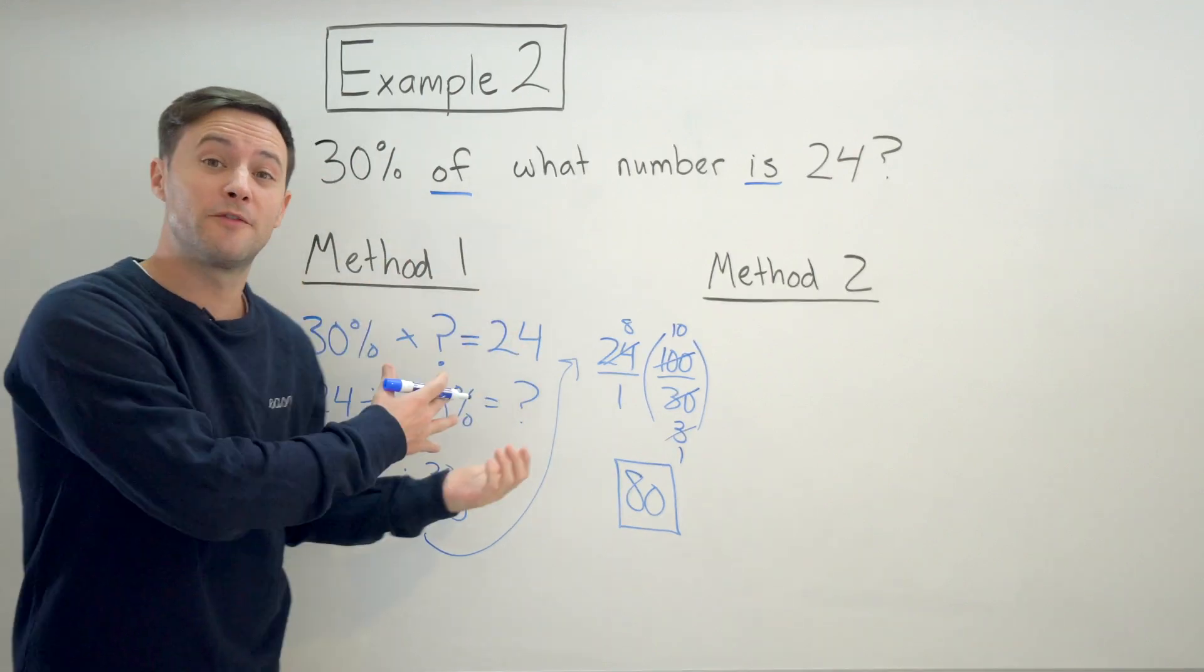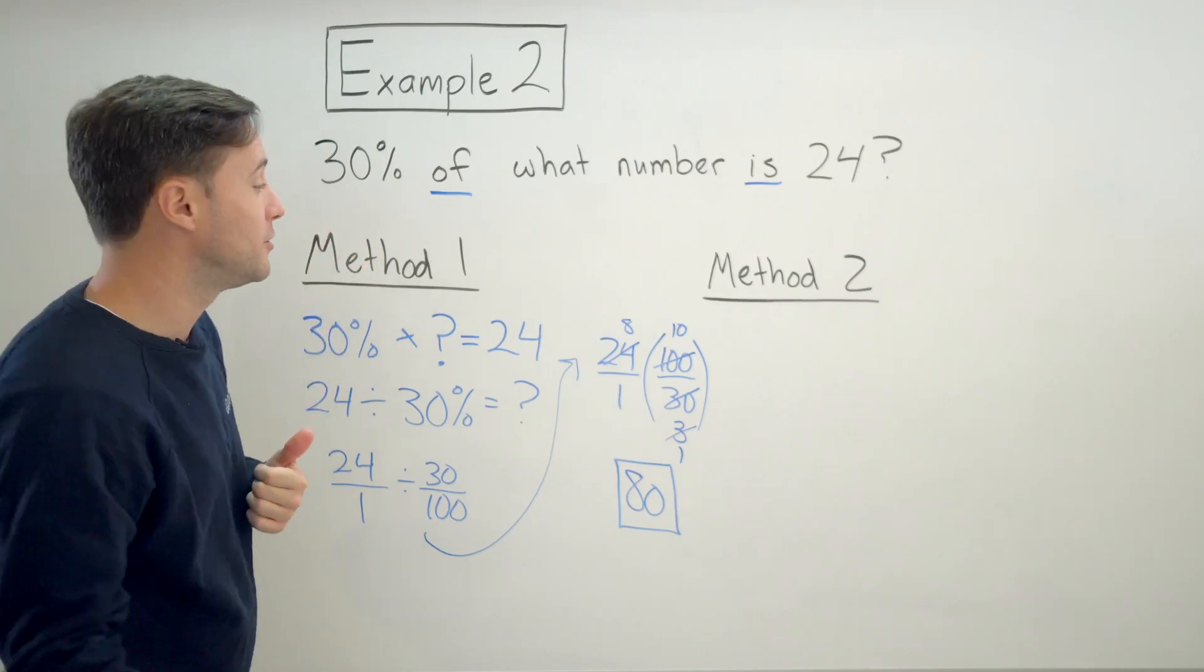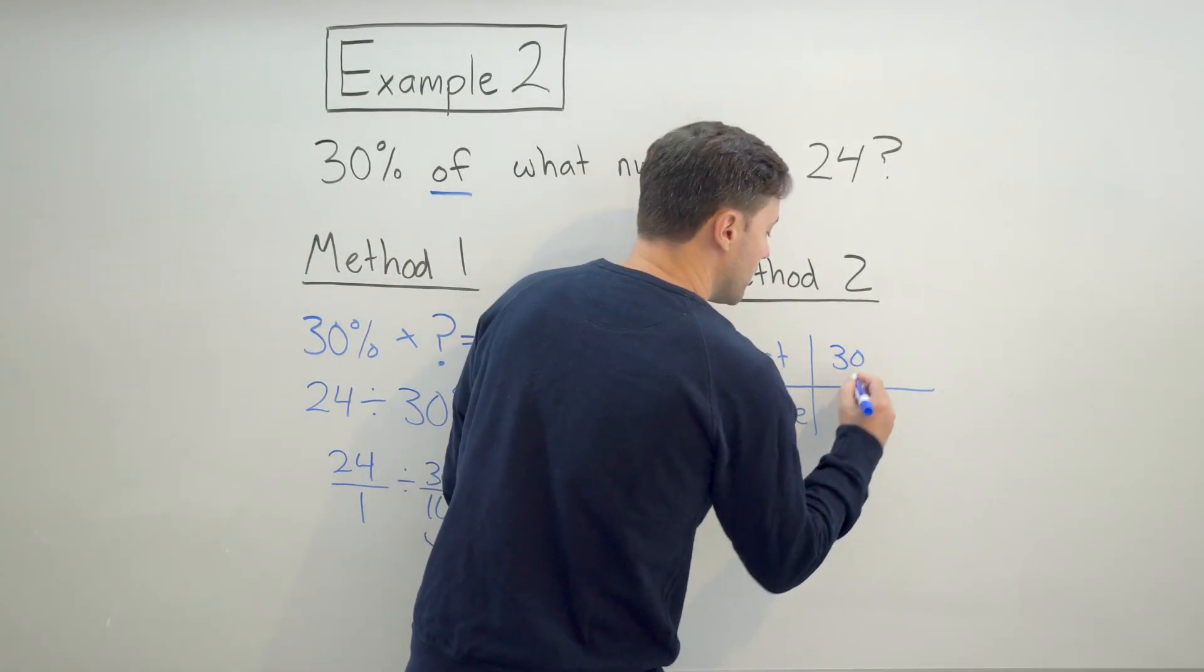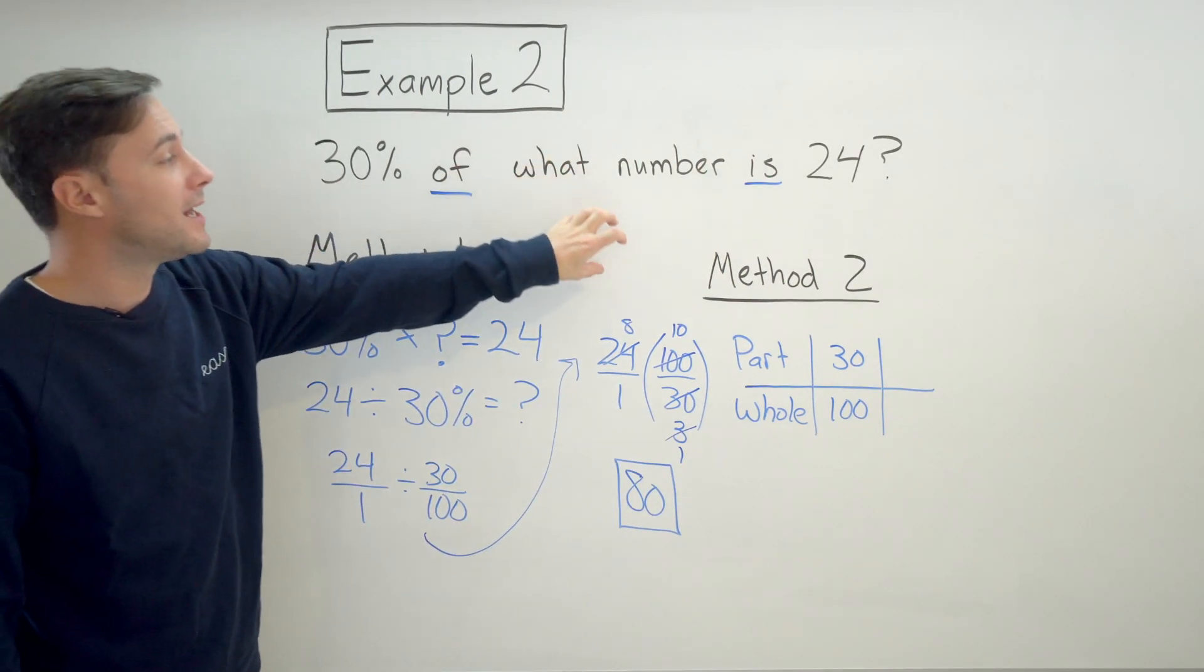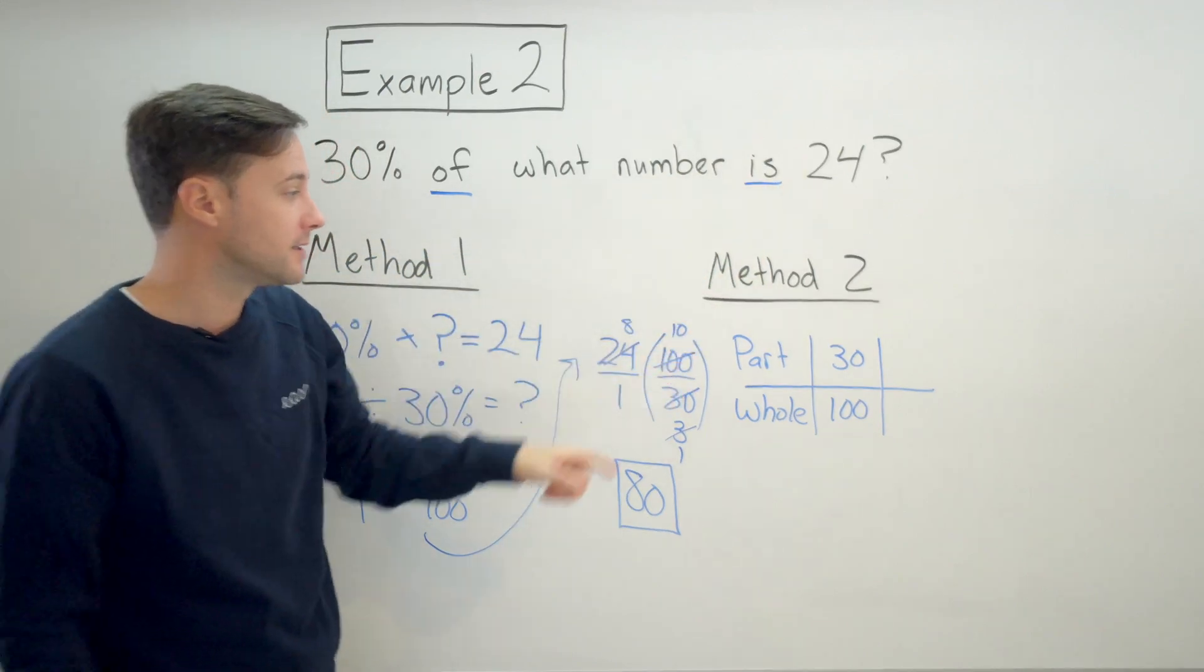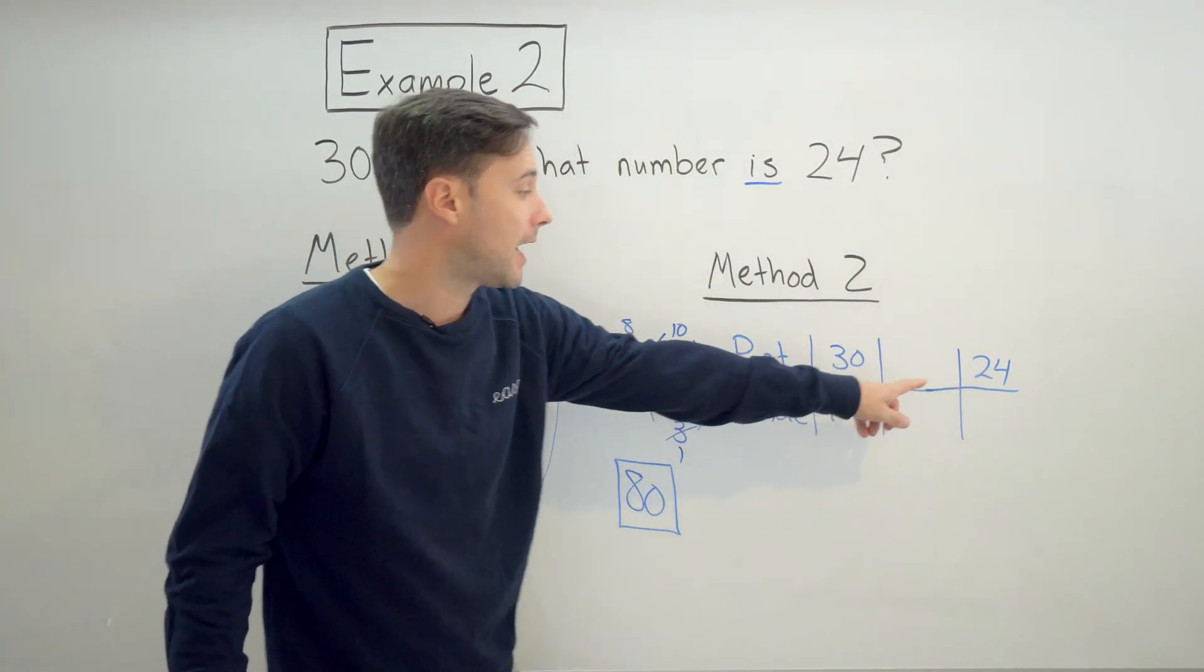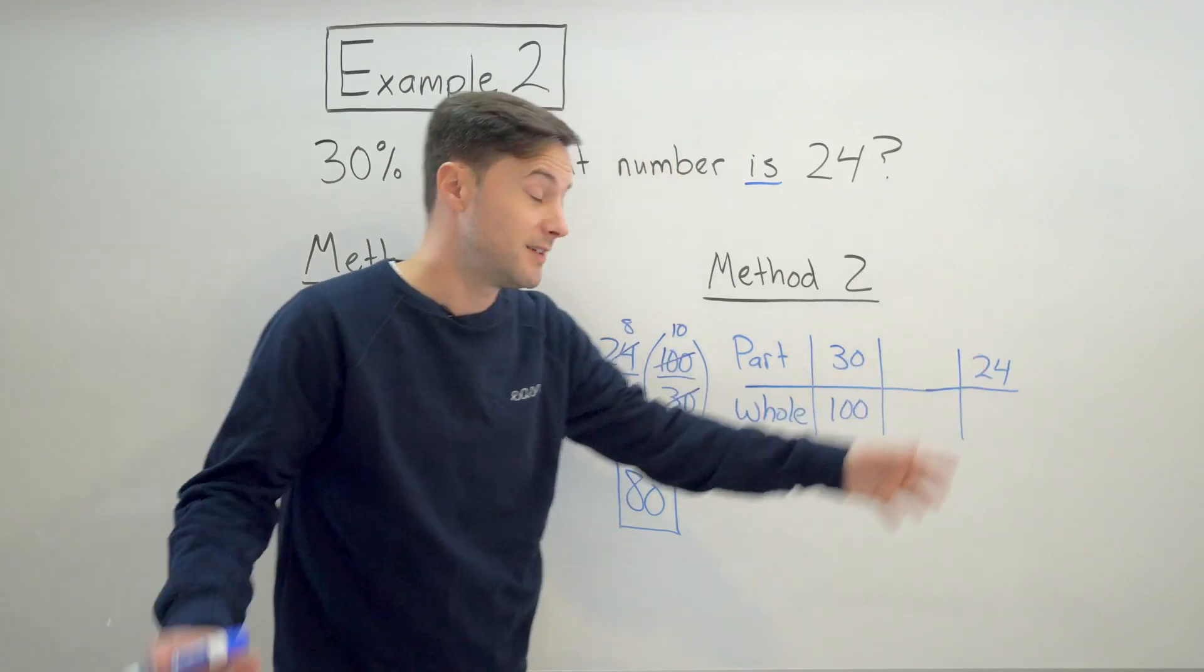Let's try the second method and see if we get the exact same answer. So if you haven't guessed, just like the first example, we're going to do a ratio table and we're going to start off with our percent. So 30%, that's 30 for the part and 100 for the whole as always. And it's 30% of what number is 24? That 24 is a part. So I know I'm going to need to get to here. I want to find what the equivalent whole is going to be when 24 is the part, is what we're doing.